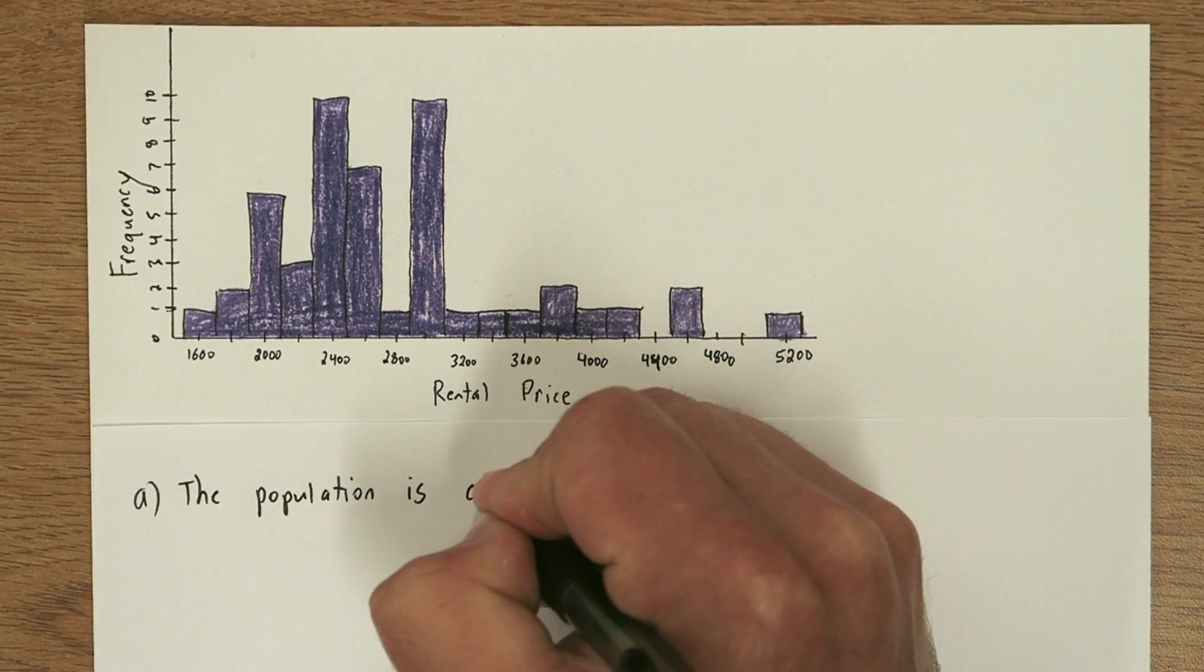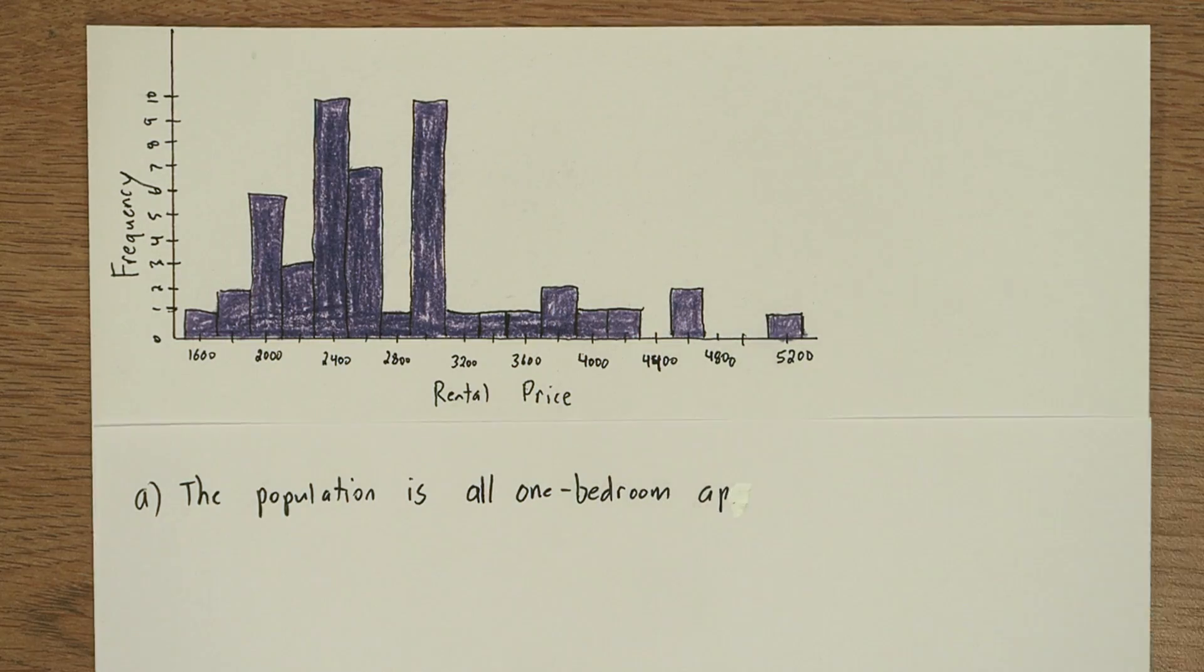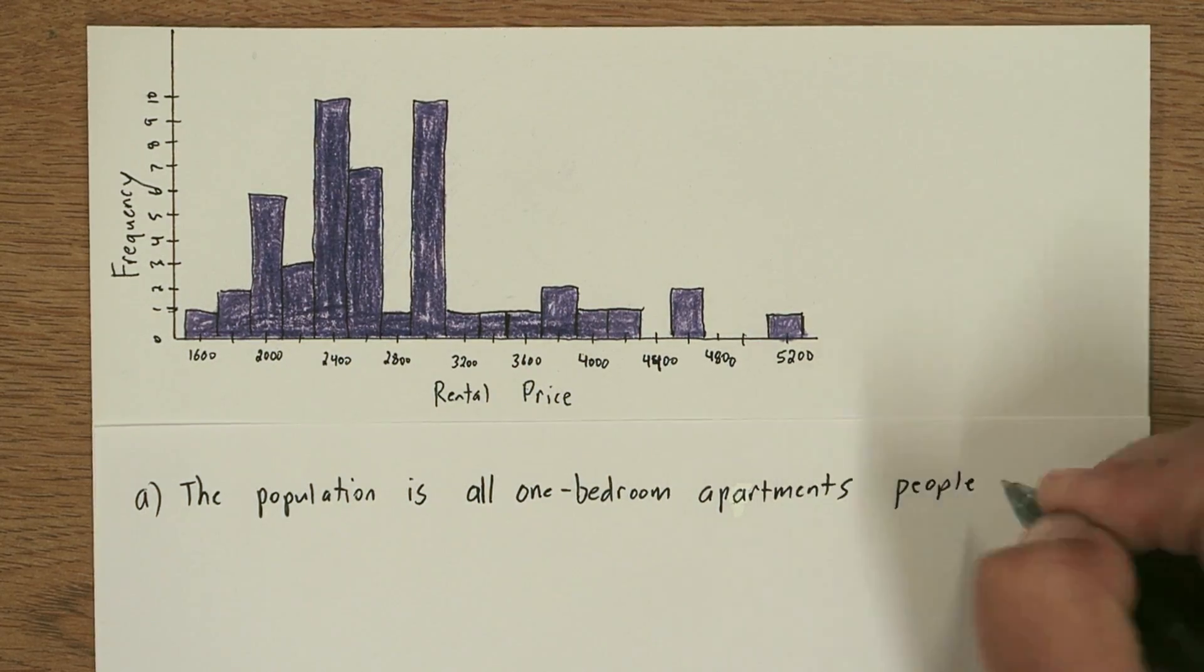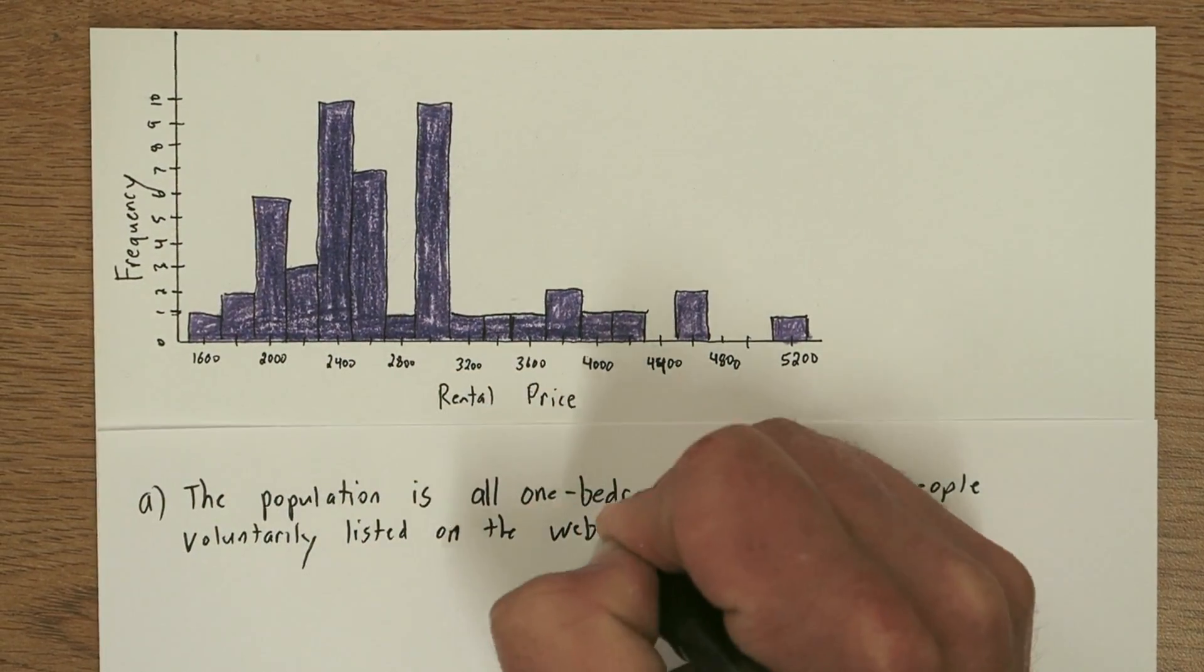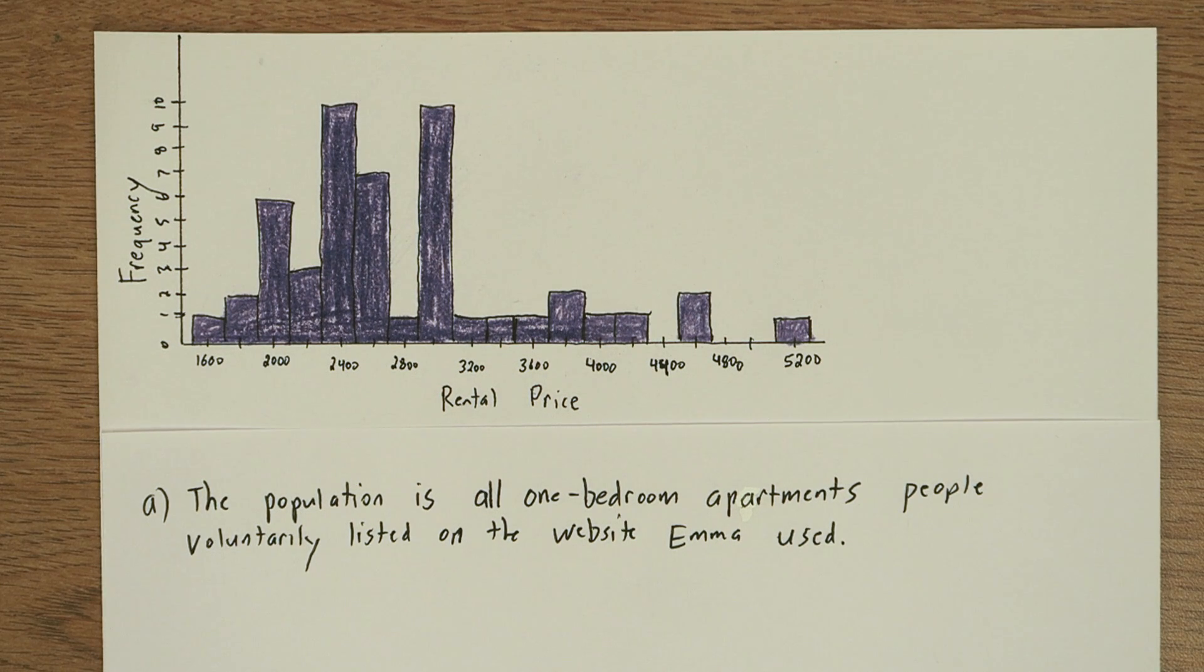So her sample was of one-bedroom apartments and all these came from a website where people voluntarily listed it. So the population is all one-bedroom apartments people voluntarily listed on the website Emma used.